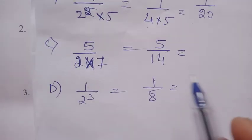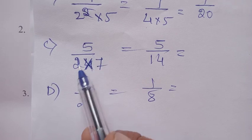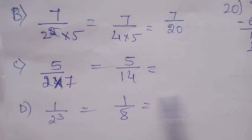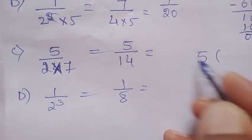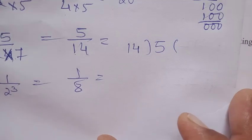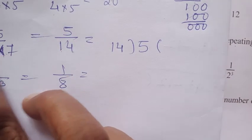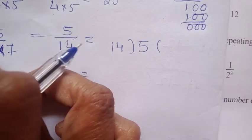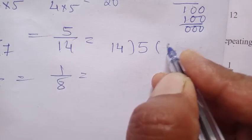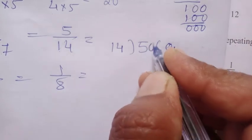Third option: 5 upon 2 into 7, that's 14. Now divide 5 by 14. Look at this - very simple calculation. First, we'll take 0 point, and this is 0. 14 times 3 is 42.